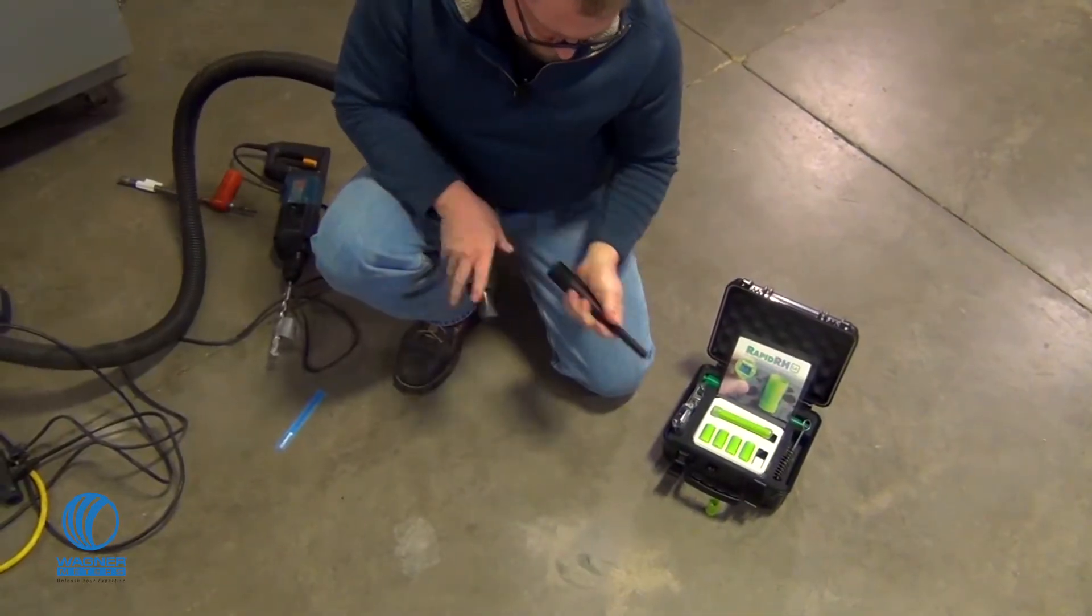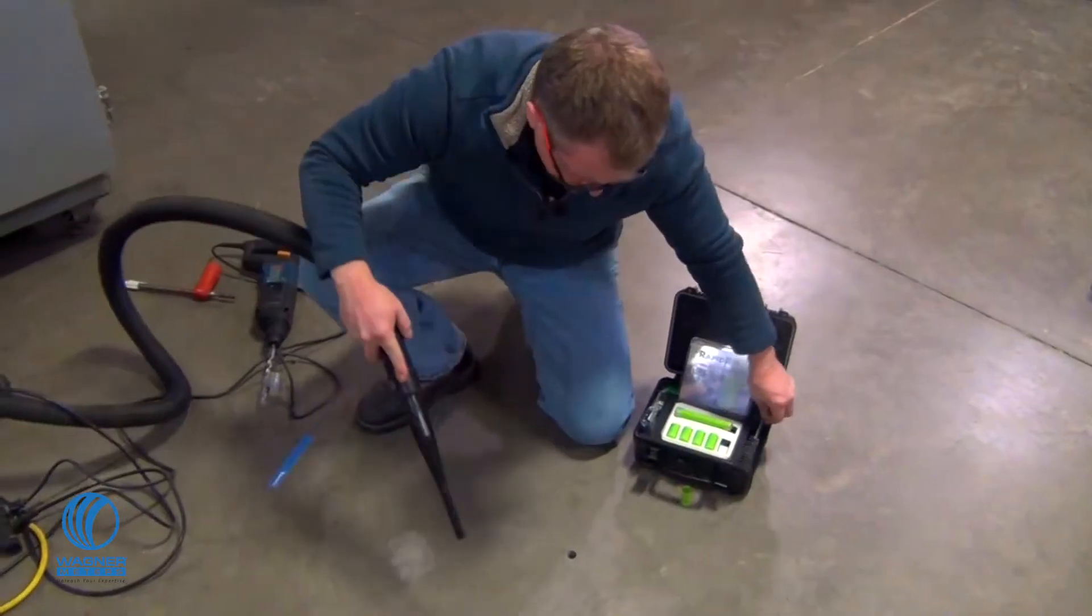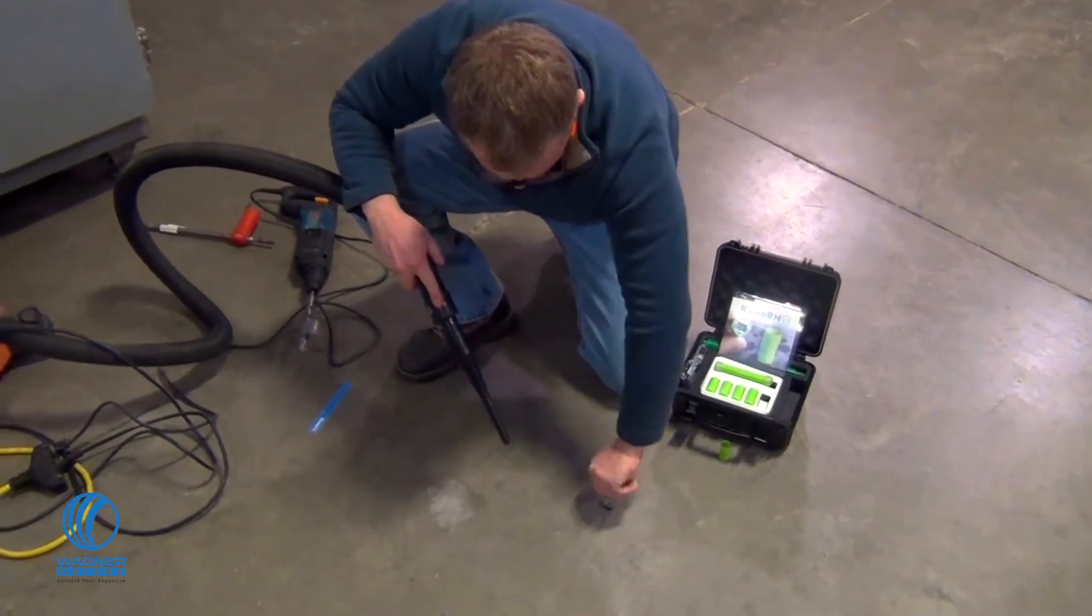Use the included vacuum attachment to remove dust particles from within the hole and use the 3/4-inch wire brush to loosen any pulverized concrete.